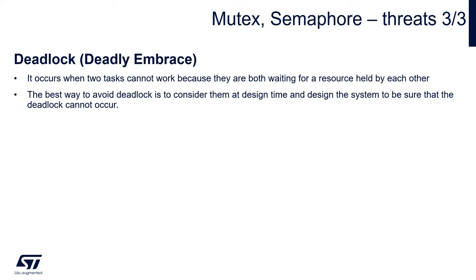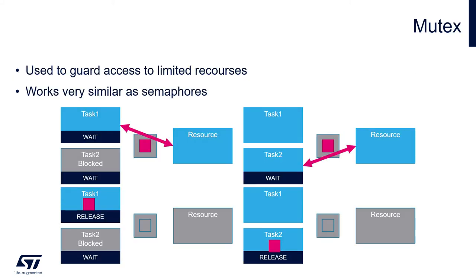The third effect we may face while working with queues and semaphores is a deadlock, called a deadly embrace. It occurs when two tasks cannot work because they are both waiting for a resource held by each other. The best way to avoid deadlocks is to consider them at design time and design the system so that the deadlock cannot occur. Here again we can use finite timeouts within functions that access resources and monitor OS_Status_t return values. If we use OS_WAIT_FOREVER, we will be stuck within the code. In general, mutexes work very similarly to semaphores — we use them to guard access to shared resources like memory buffers or communication interfaces, to ensure only one task has access at a time.